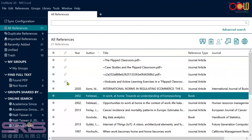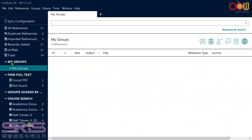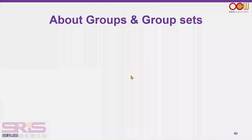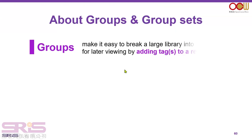After collecting many references, your library will grow and you may want to group them for easier management. You can use My Groups. A group is a way to break your large library into subsets so you can categorize and access references more easily. During the writing process, you can add references easily when they are organized into groups.